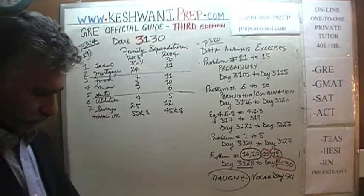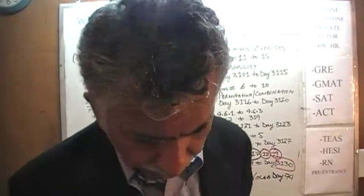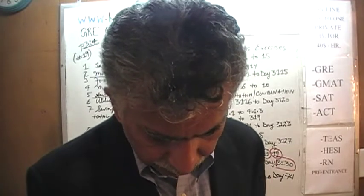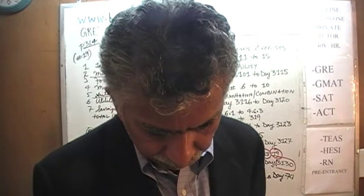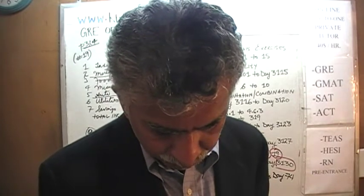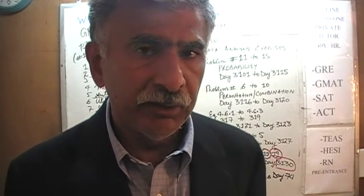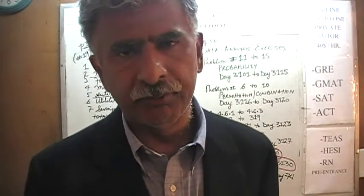There is one problem here with two parts — Part A and Part B. Let me read Part A verbatim: 'In 2003, the family used a total of 49% of its gross annual income for two of the categories listed. What was the total amount of the family's income used for those two same categories in 2004?' So this is a two-part job. First we have to figure out which two categories in 2003 the family spent 49% of their income on, and then find how much they spent on those same categories the following year.